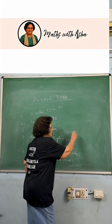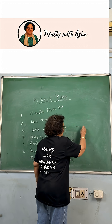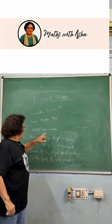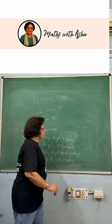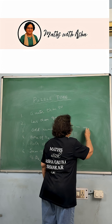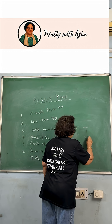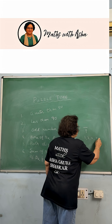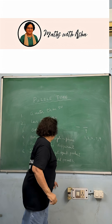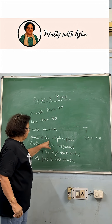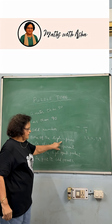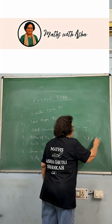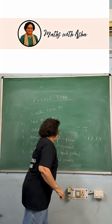This tells us that it is a two-digit number between 50 and 90. It is an odd number — that means the units digit is odd, so it is 1, 3, 5, 7, or 9. None of the digits is prime, so this digit cannot be 3, 5, or 7.